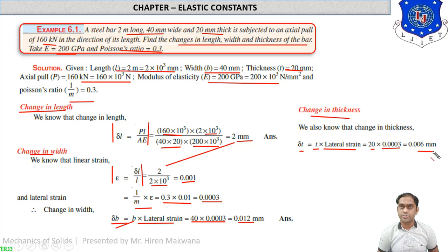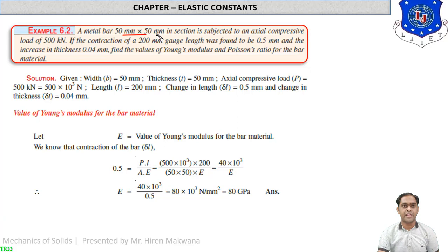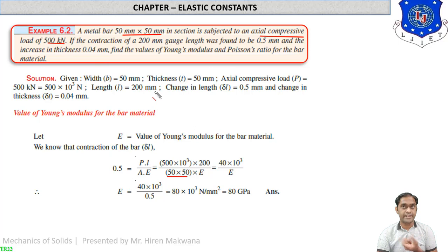Example 6.2: a metal bar 50 mm × 50 mm cross-section is subjected to an axial compressive load of 500 kilonewtons, which equals 500 × 10³ newtons. Since it is compressive, length will be decreasing. The gauge length is 200 mm.